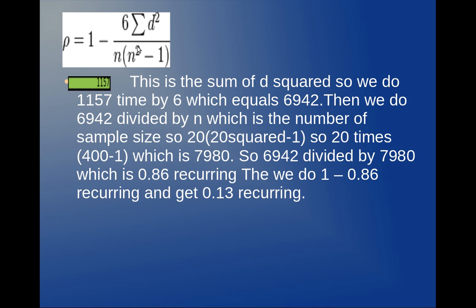So here is Spearman's rank formula. And 1157 represents sigma d squared over here, so the sum of the difference squared. So the first thing I have to do is 6 times 1157, which gets me 6,942. And that equals the numerator over here.